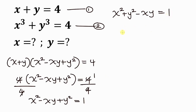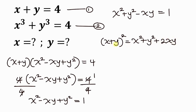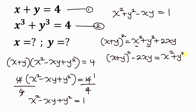Our next step is to use the identity for x plus y all raised to the power of 2, which expands to x squared plus y squared plus 2xy. I'm interested in x squared plus y squared, so I rearrange: x squared plus y squared equals x plus y all squared minus 2xy. We'll substitute this in place of x squared plus y squared in our equation.